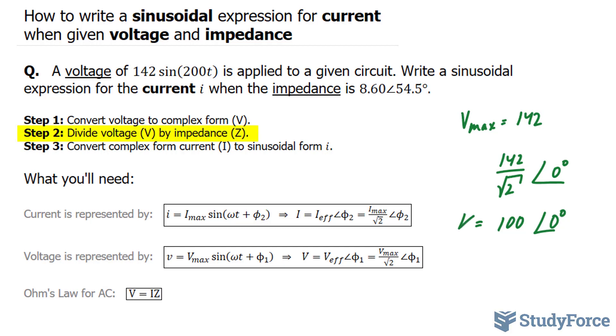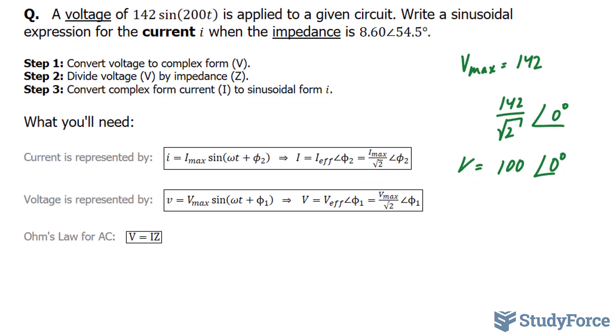Step 2: we have to divide the voltage by impedance Z. The reason is because there's a relationship between voltage, current, and impedance. In order to find the current, we divide both sides by Z, and we end up with V/Z equals the current.